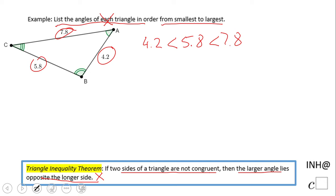4.2 is AB, which is less than 5.8 which is BC, which is less than 7.8 which is AC. And now we can translate this according to the angles using this theorem.